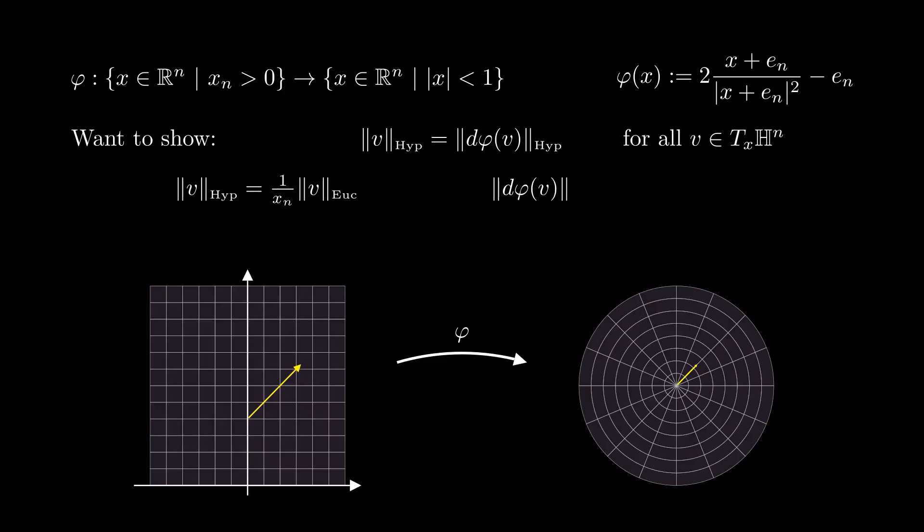The hyperbolic length of v is its Euclidean length over x_n, and the hyperbolic length of d phi v is its Euclidean length over 1 minus the length of phi of x squared. The most complicated term in these expressions is the denominator involving the norm of phi of x, so we start by expanding it.